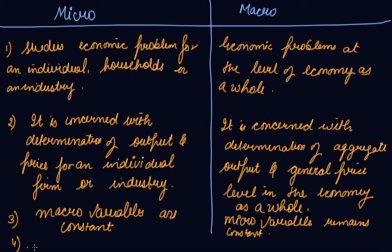Difference number four is the scope of study. The scope of microeconomics includes individual demand, individual supply, consumer behavior, production theories, and price determination for a firm. The scope of macroeconomics includes aggregate demand, aggregate supply, price determination for the whole economy, and national income. Everything you study in macroeconomics becomes its scope, and everything in microeconomics becomes the scope of microeconomics.